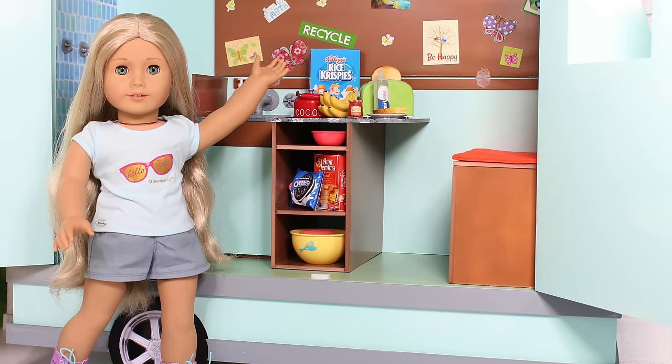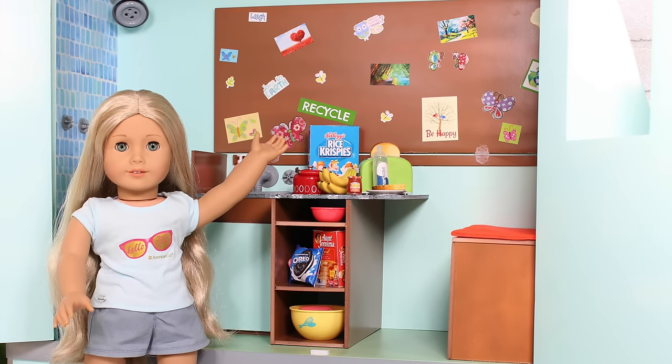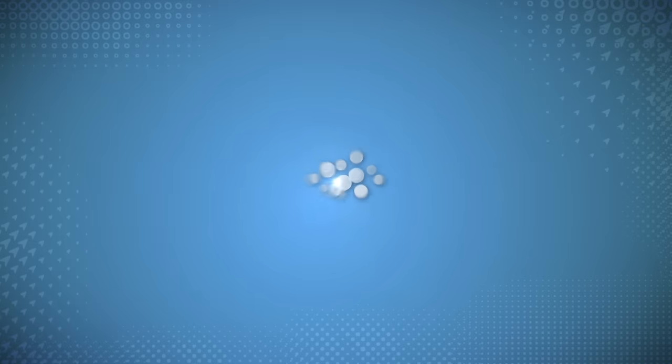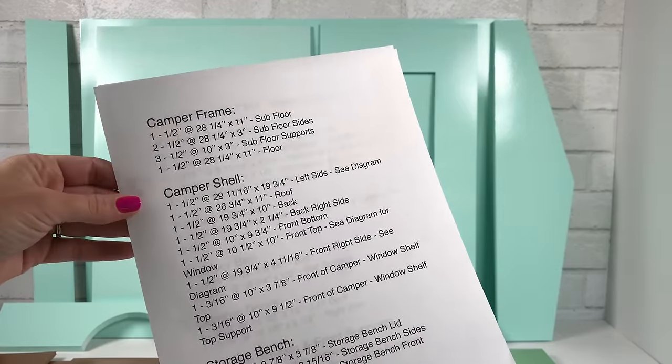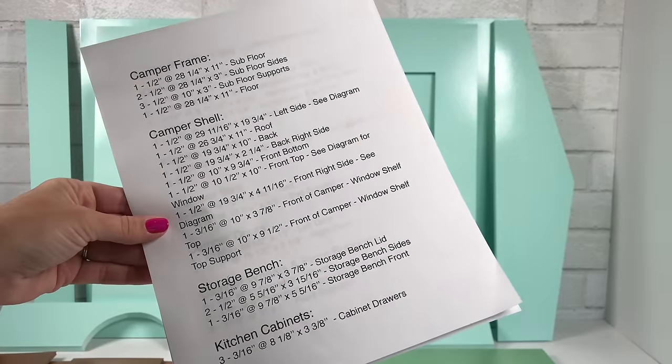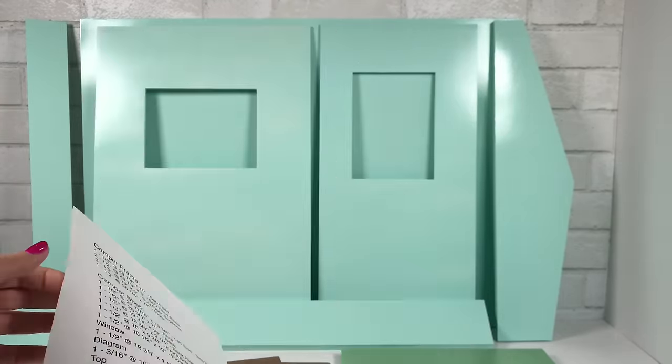I'm going to show you how to make a doll camper using foam board and hot glue. Start by cutting out all the pieces for the camper, and you can find a list of measurements on my blog.